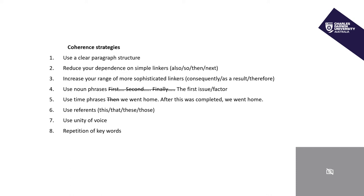Number seven is unity of voice. This phrase means that if you start using a plural — for example the word students — it's generally considered good style to keep using the plural all the way through. It can be considered poor style to keep switching from singular to plural. Finally, coherence strategy number eight is repetition of keywords. Repeating the keyword can be a powerful device to keep the reader engaged with the main point you are developing.